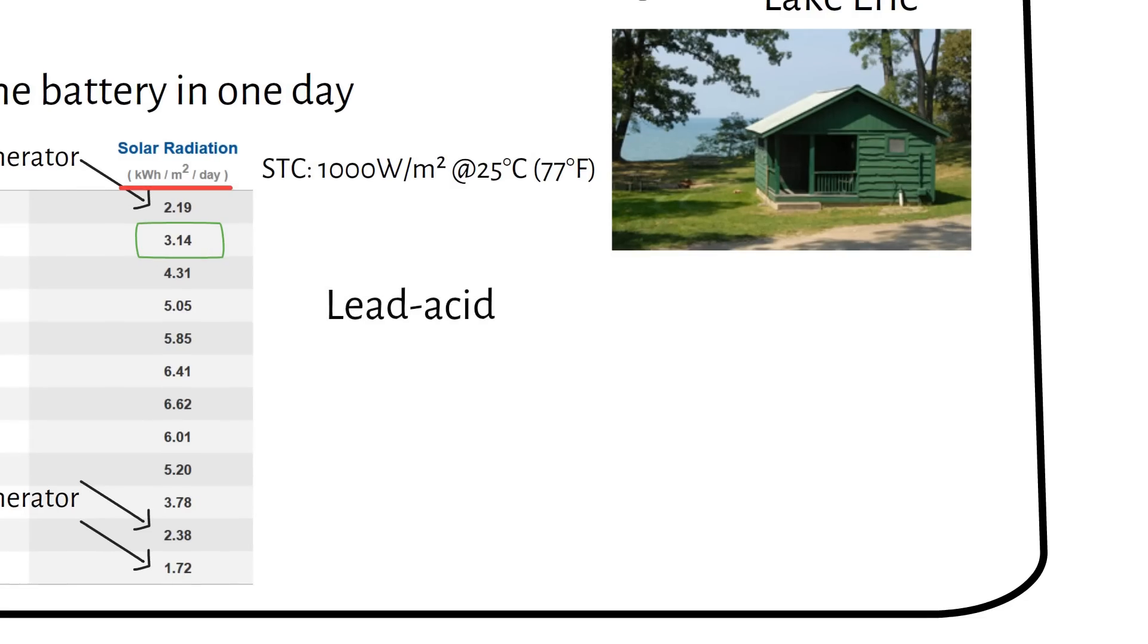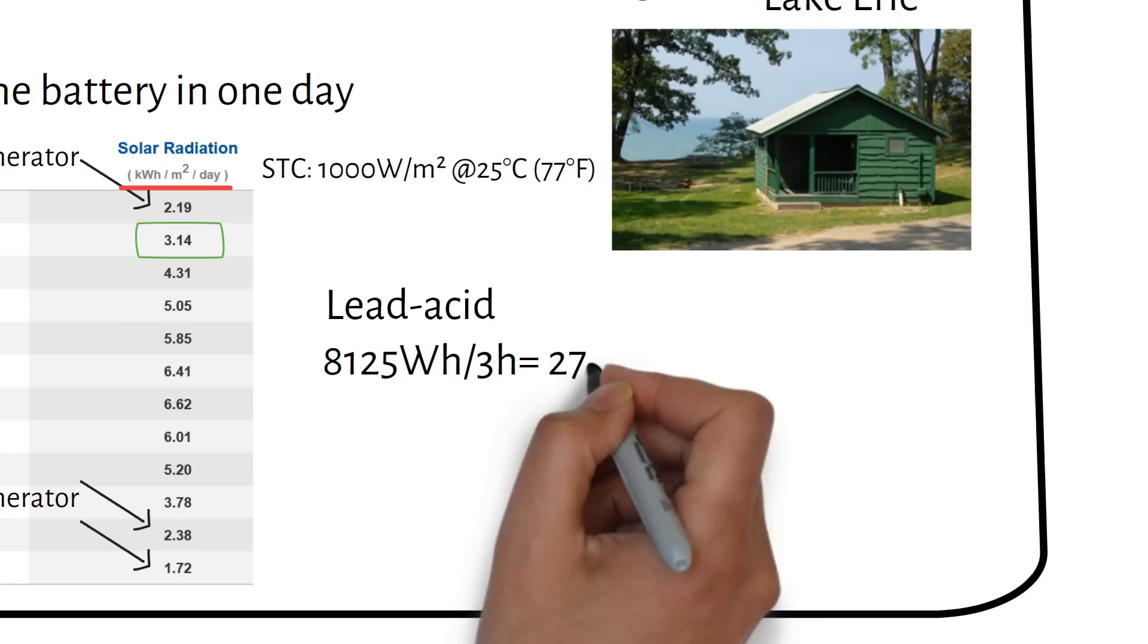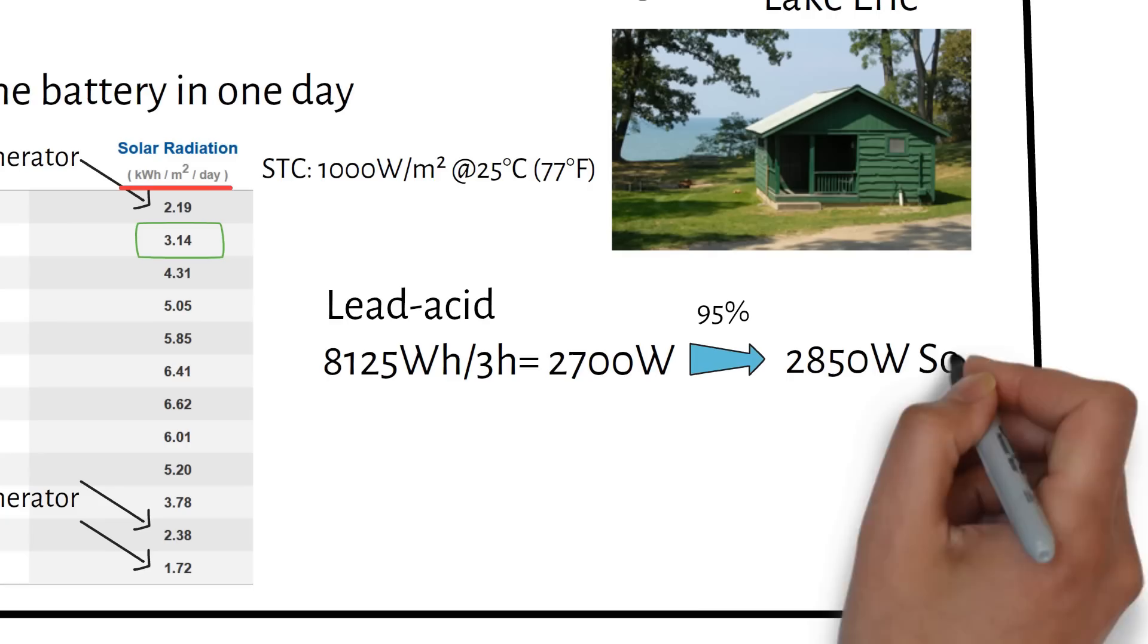To recharge a lead-acid battery from 50 to 100% we needed 8125 watt hours. With 3 sun hours this becomes a total of 2700 watts. Then, divided by the charge controller efficiency of 95% we become 2850 watts of solar panels.